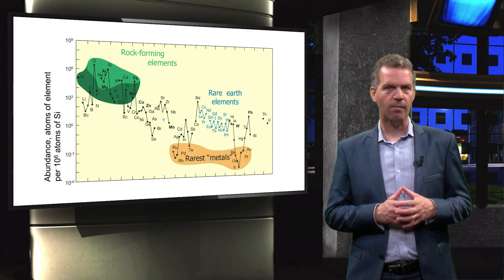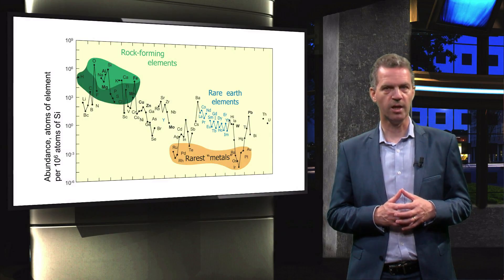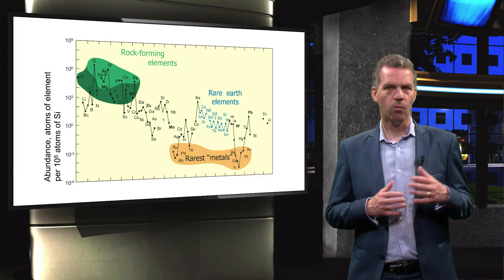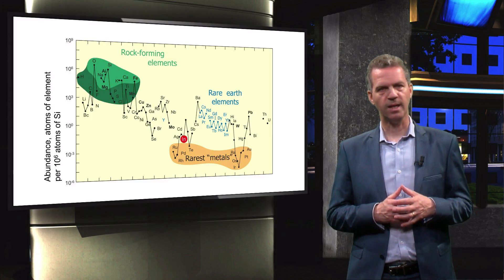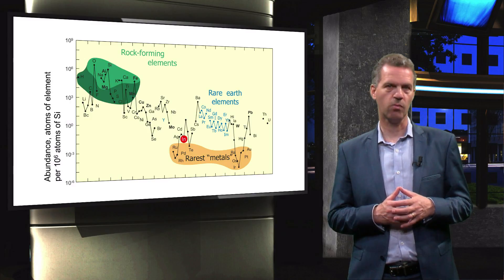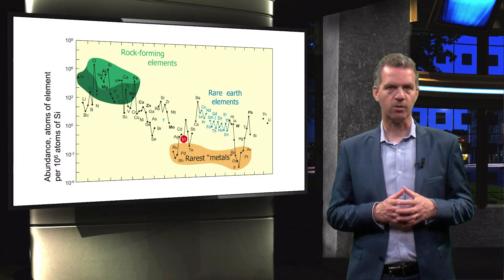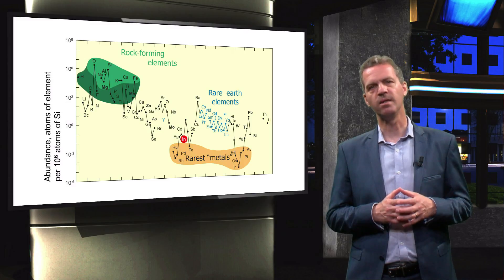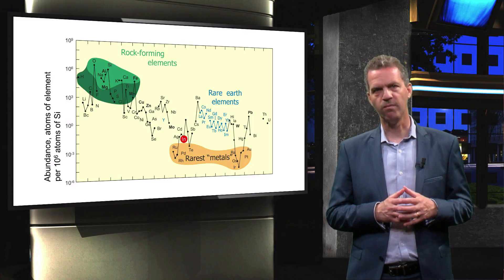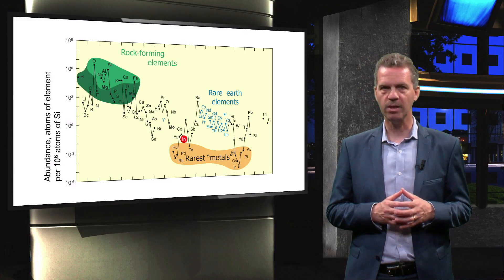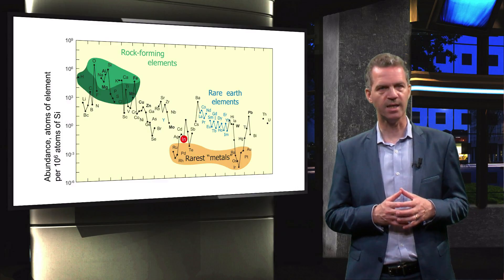However, cadmium is not the only element that causes upscaling troubles for the CIGS technology. We can see from this graph that indium is a relatively rare element in the earth's crust, and this element is already being used extensively in the display industry, so it has been foreseen that this element may limit the upscaling of the CIGS industry.